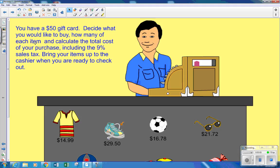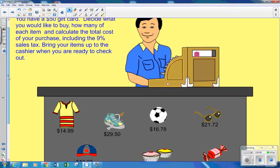You have a $50 gift card. Decide what you'd like to buy, how many of each item, and calculate the total cost of your purchase, including the 9% sales tax, which is a little lower than what it is here. Bring your items up to the cashier when you're ready to check out. Let's say I need some sunglasses. So I'm going to bring this up to the cashier, $21.72. But I have to figure out the sales tax. The sales tax is 9%.